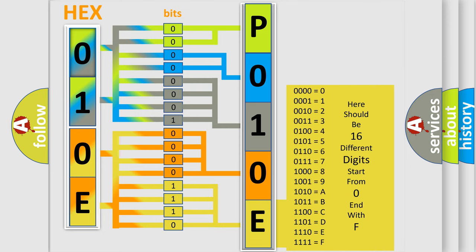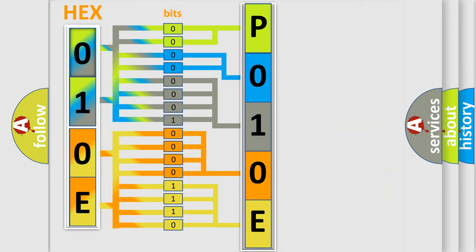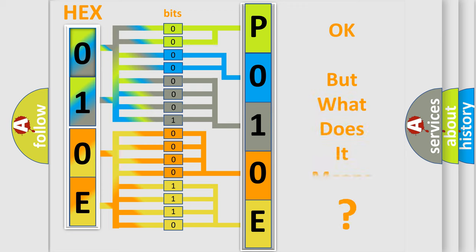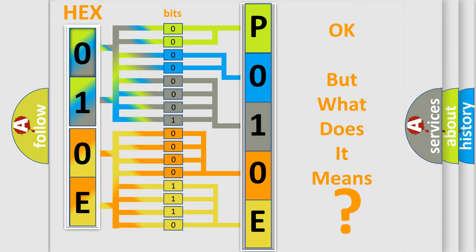We now know in what way the diagnostic tool translates the received information into a more comprehensible format. The number itself does not make sense to us if we cannot assign information about what it actually expresses. So, what does the Diagnostic Trouble Code P010E interpret specifically for Lincoln car manufacturers?